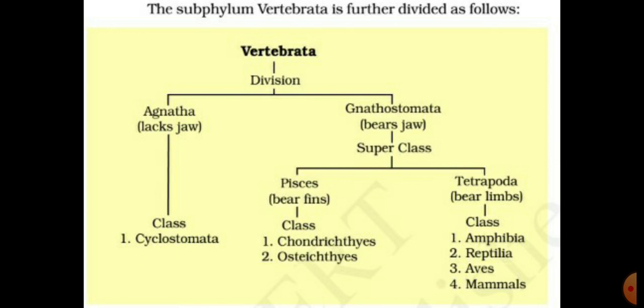The other superclass of Gnathostomata is Tetrapoda. Tetra means four, poda means legs — two pairs of limbs are present. In Tetrapoda, the brain box is present, upper and lower jaws are present, and two pairs of limbs are present. Tetrapoda can be divided into four classes: Amphibia, Reptilia, Aves, and Mammalia. Tetrapoda is believed to have evolved from Pisces, so Pisces is considered the ancestor of Tetrapoda.